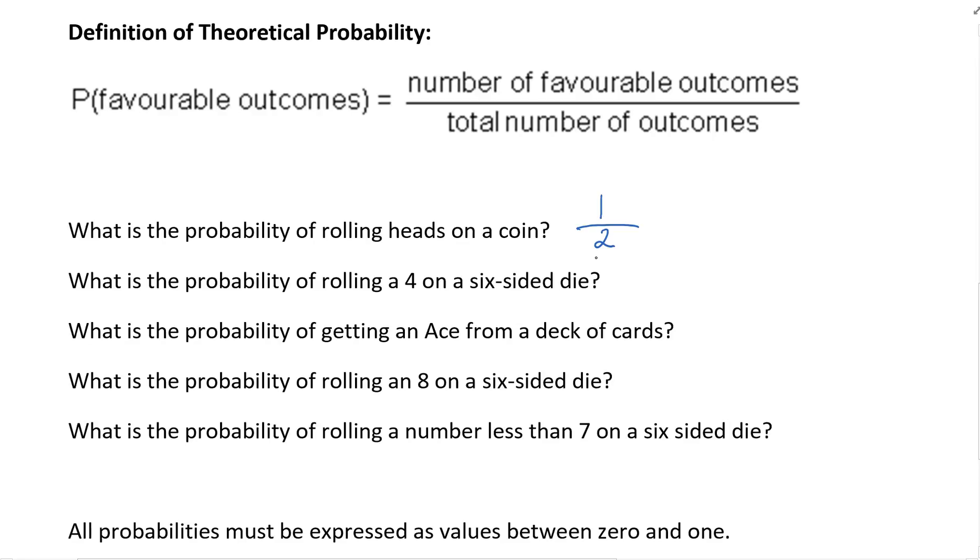Now probability can be written as a fraction, it can also be written as a decimal, it could also be written as a percent as well. What is the probability of rolling a four on a six-sided die? Students are very tempted to write four over six but this is wrong because there's only one four on a six-sided die. So we would write one which is our favorable outcome. We have one four out of the six possible values that are on our six-sided die.